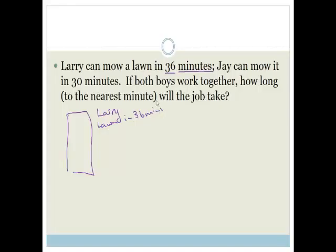Jay can do the same lawn in 30 minutes. So he can do the lawn in 30 minutes. Now it says, if both boys work together, how long to the nearest minute will the job take?